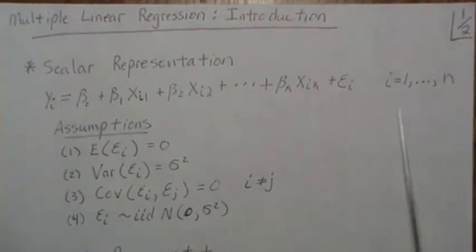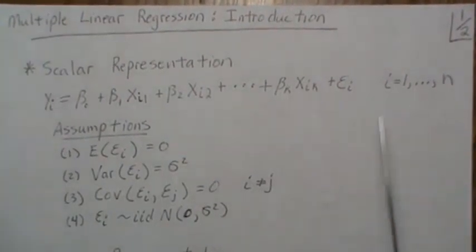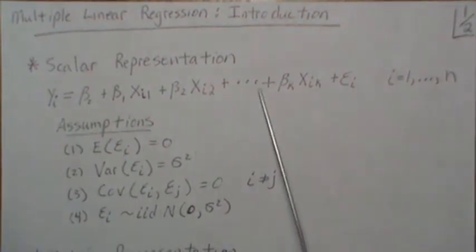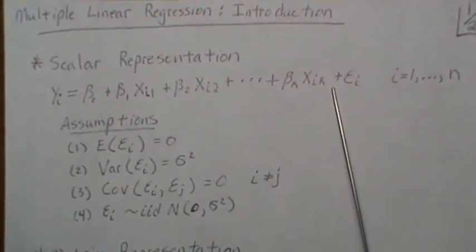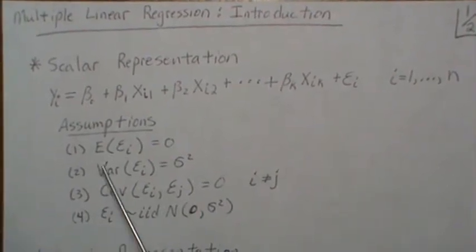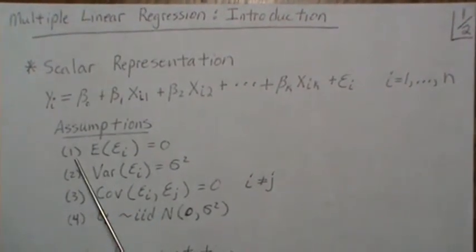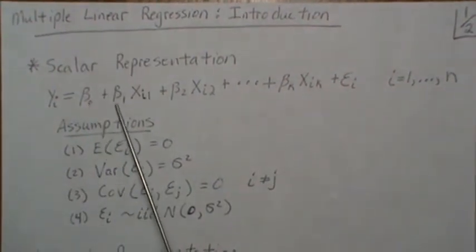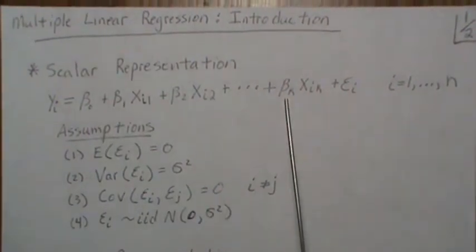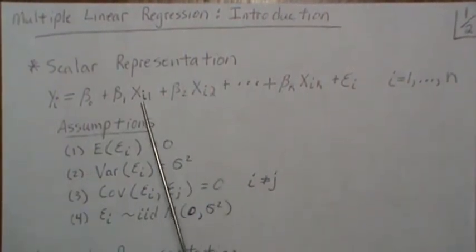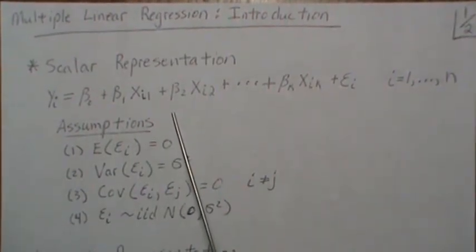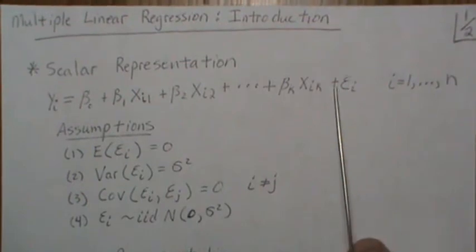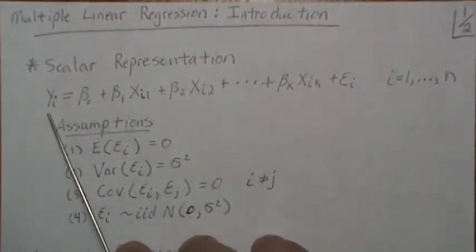Now we collect a sample of size n, so this observation represents a person or a unit or an observation. The assumptions that we have is that these are fixed unknown constants and the x's are fixed or measured with almost negligible error, but the error term is random which then makes y random.